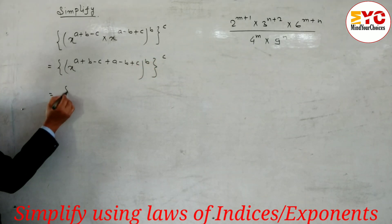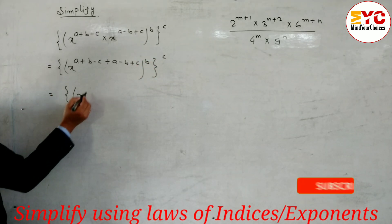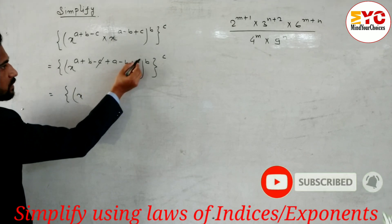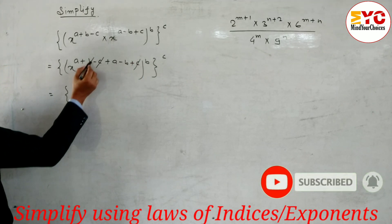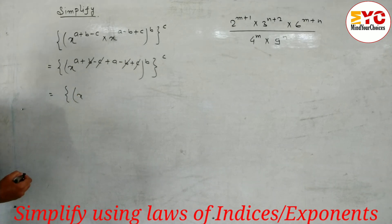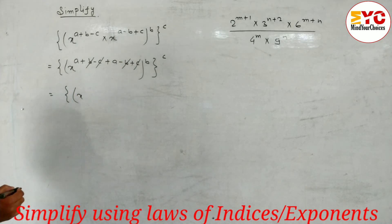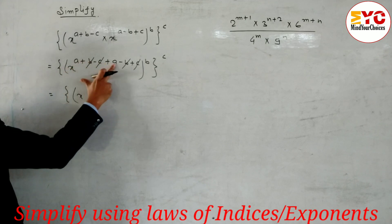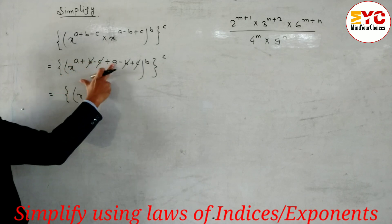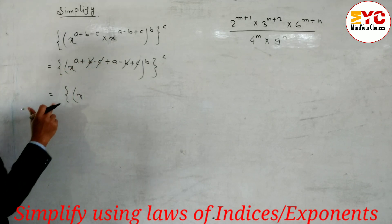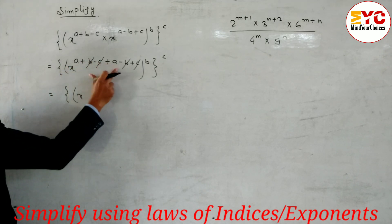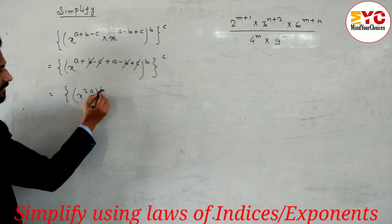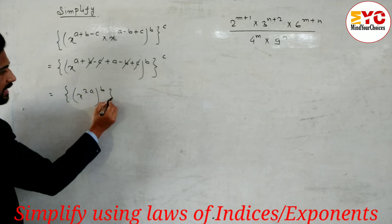So x to the power — you can see here we can cancel c and c, one positive and one negative. Again we can cancel b and b, also one positive and one negative. What is remaining is a and a. These two are like terms and both in the form of addition, so a plus a equals 2a.